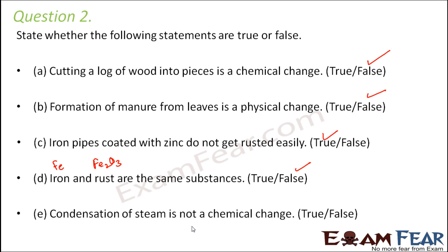Condensation of steam is not a chemical change — that is true. When you condense steam, you get water. Steam is H2O and water is also H2O, so chemically it still remains the same. It is only the state that changes from gaseous to liquid, making it a physical change. So the statement that it is not a chemical change is correct — true.